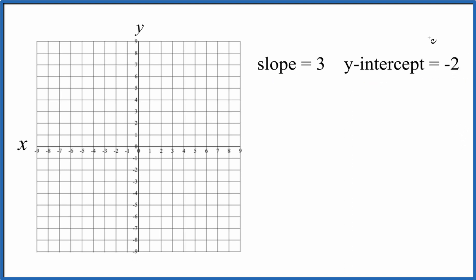To do that, let's look at the y-intercept first. We have negative 2. What that means is if we go to the y-axis here, we're going to find negative 2. That's where our line is going to cross the y-axis.